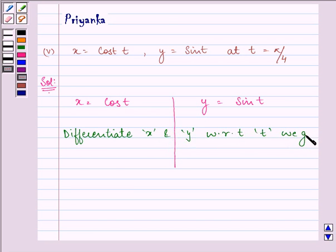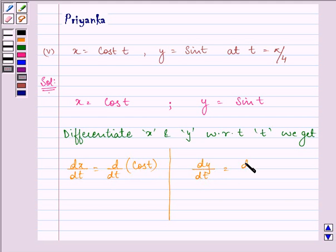On doing so we get dx by dt equal to d by dt of cos t. Here we have dy by dt equal to d by dt of sin t. Which gives us dx by dt as derivative of cos t is equal to minus sin t.